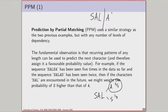The decompressor mirrors that prediction — it also sees S-A-L and assumes the same two-thirds probability for A. Encoding A with that probability is incredibly efficient. But there are issues: what if after S-A-L I want to encode the letter E? If A has probability two-thirds and S has probability one-third, there's no probability left for E. How do I tell the decompressor that it's seeing a character that wasn't predicted by the context? This is where the escape symbol mechanism becomes essential in PPM.